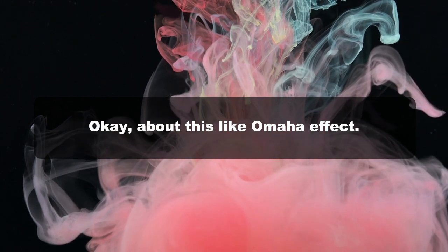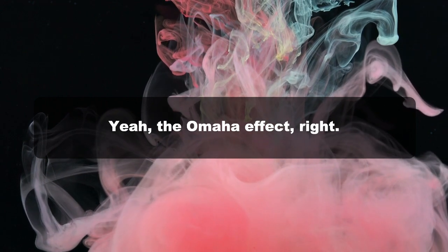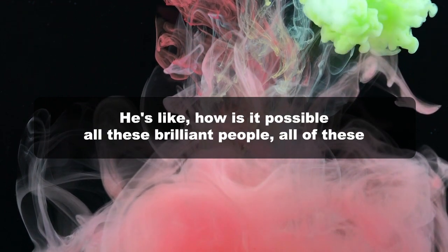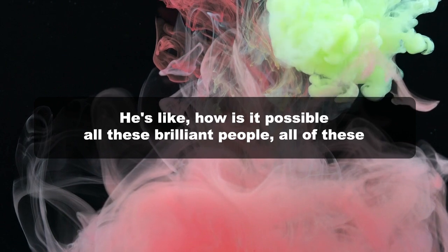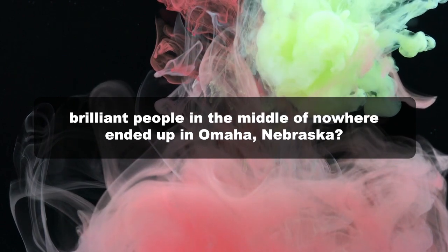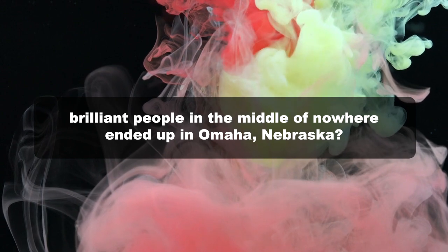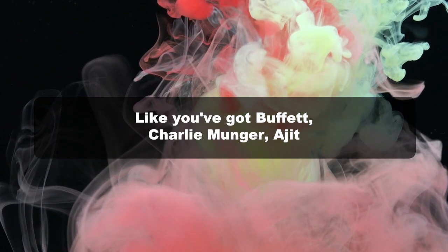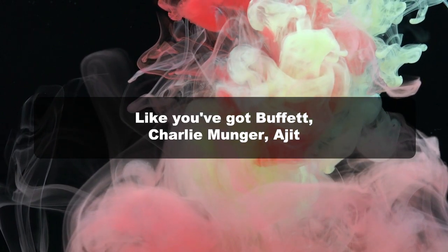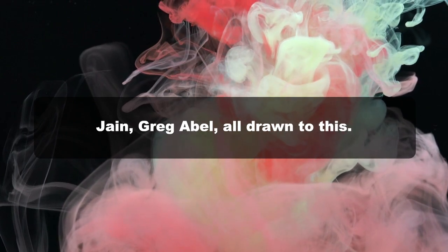The Omaha effect. He's like, how is it possible that all these brilliant people ended up in Omaha, Nebraska? It's crazy. You've got Buffett, Charlie Munger, Ajit Jain, Greg Abel—all drawn to this random place in the middle of the country. It's not like it's Silicon Valley. Maybe there's something in the water—the corn-fed magic.